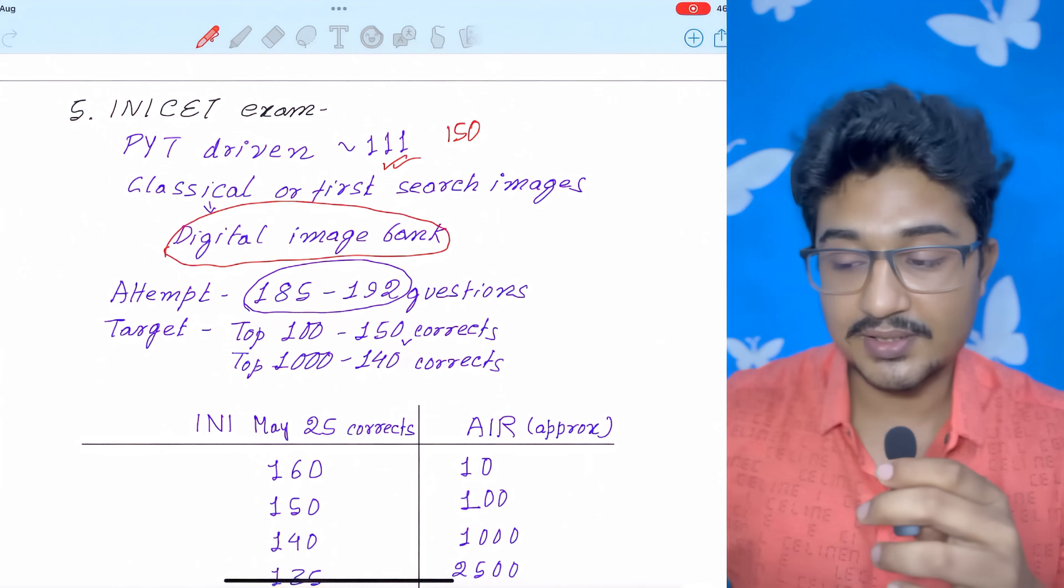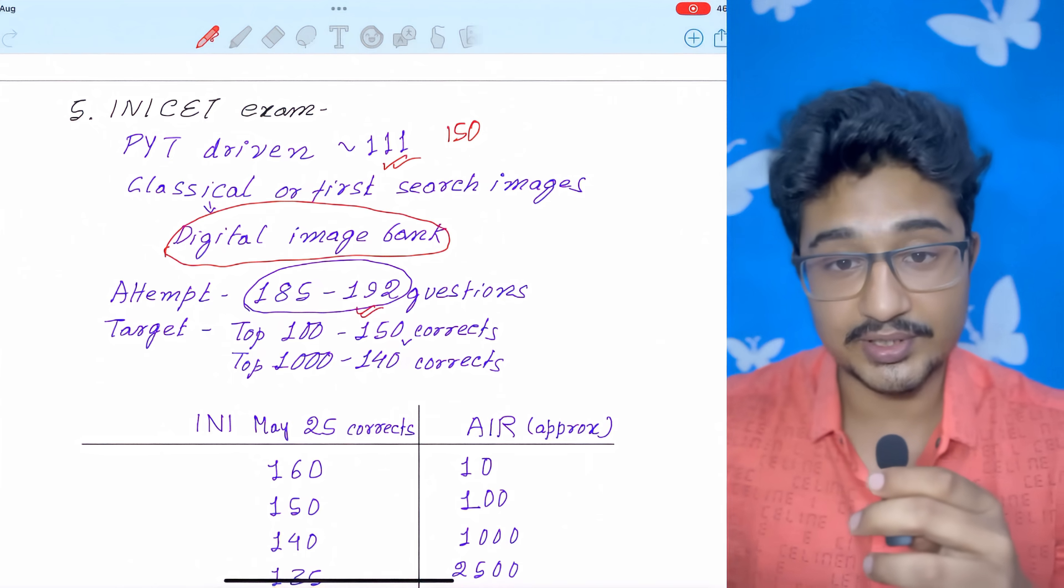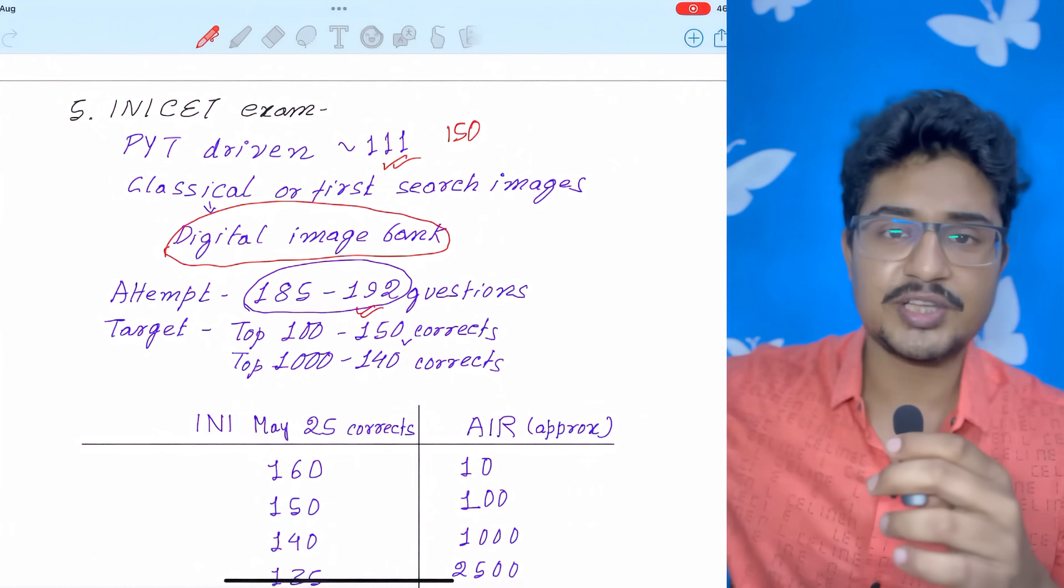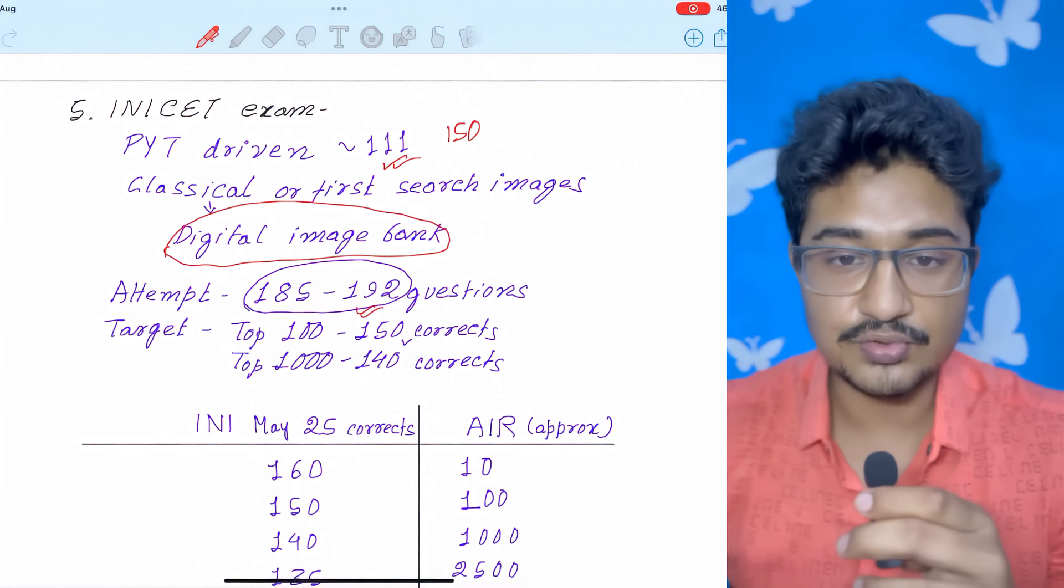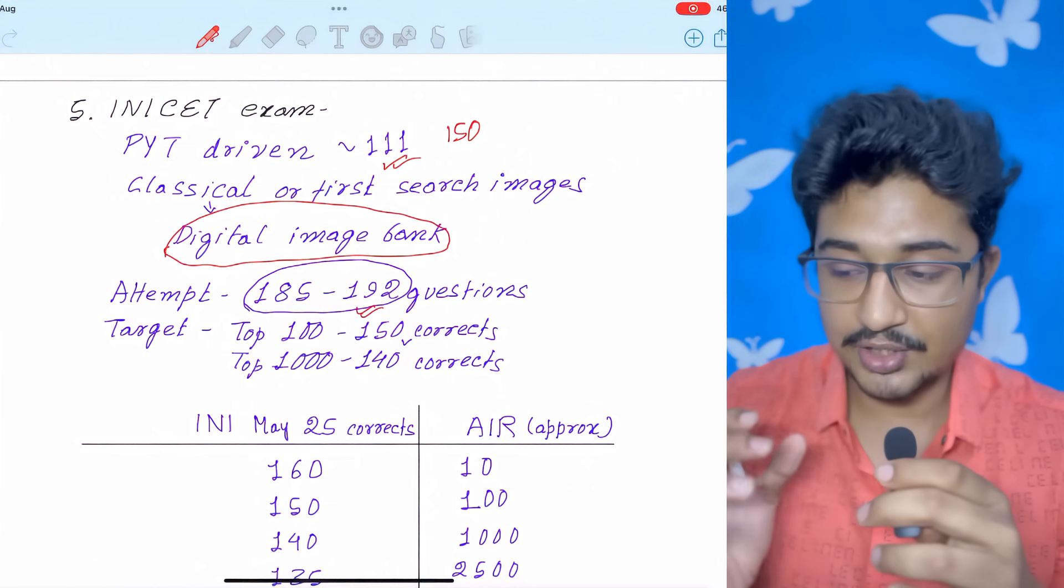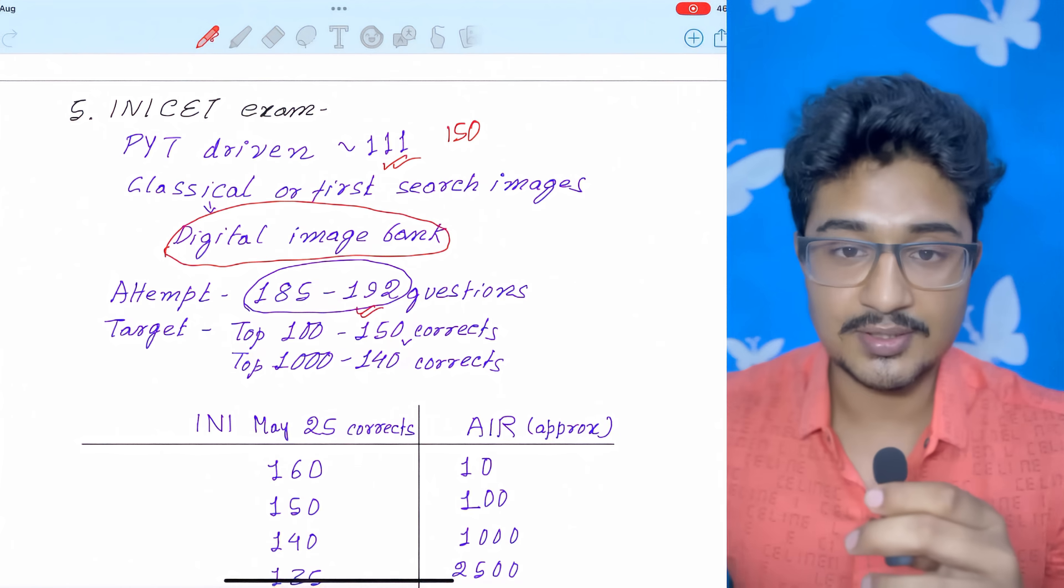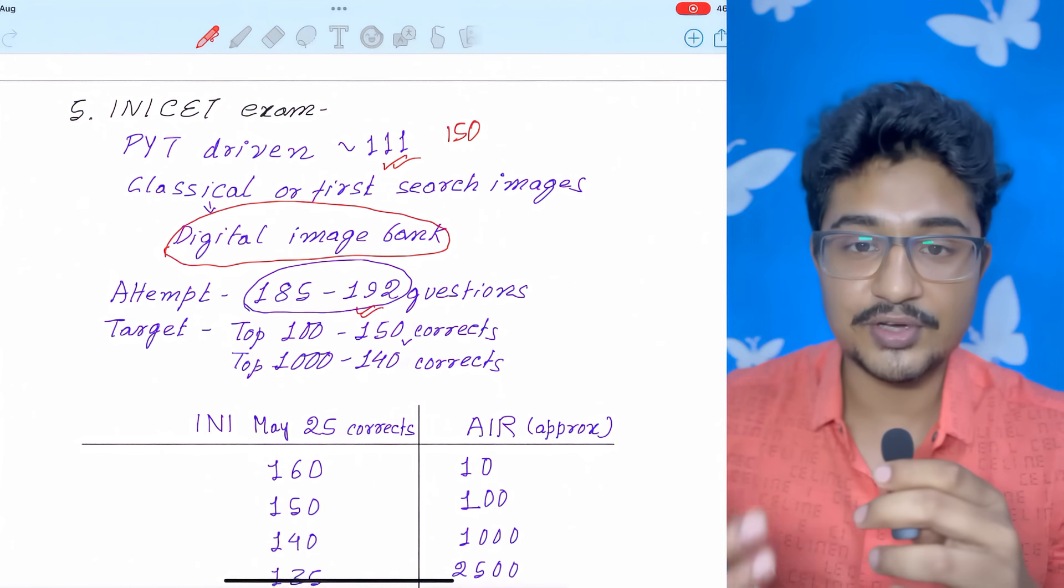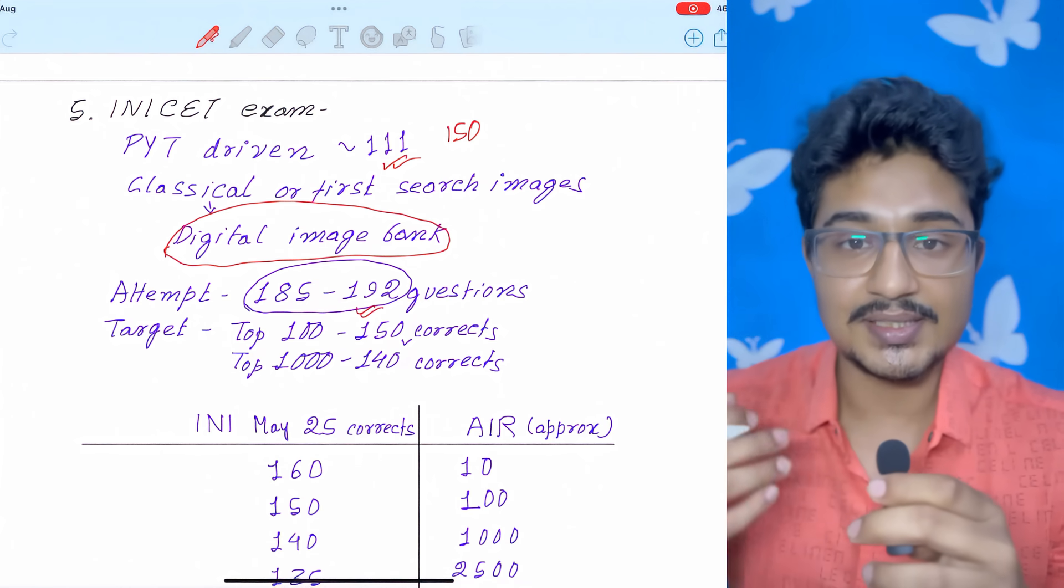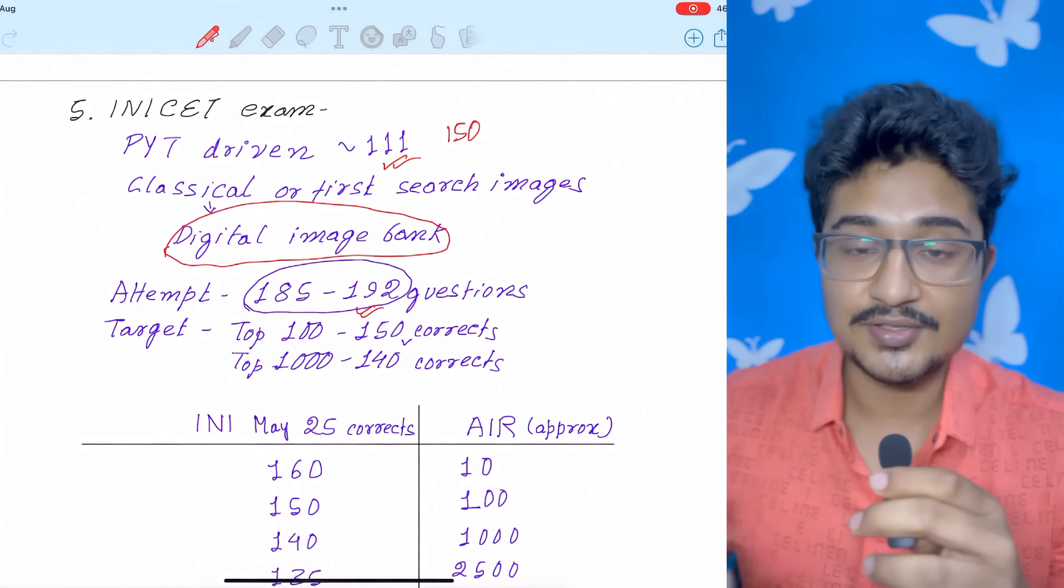Try to attempt 185 to 192 questions. This is the sweet spot. I will say don't go too much high or don't go too much low. You have to be in this zone to get a desired rank because at least 8 to 10 questions in the INICT are unattemptable. Don't go over attempting them because if you commit mistake, then there is 0.33 marks negative. Negative is more here. So, if you commit negative, then your rank will drop very much.